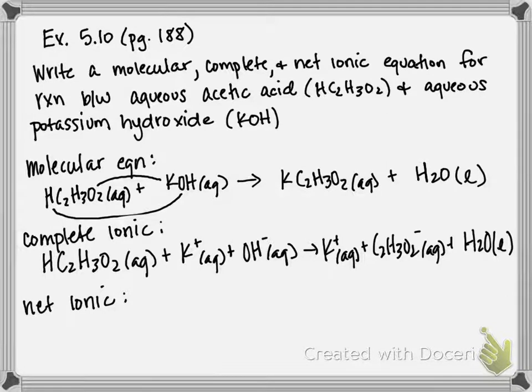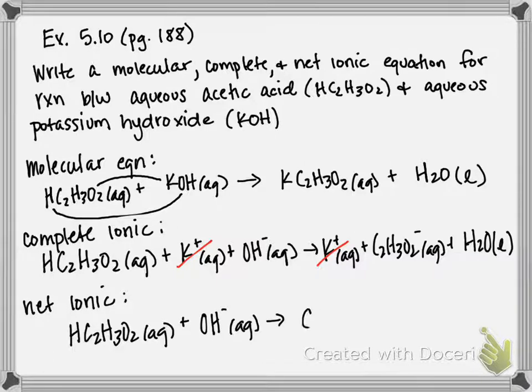Now that our complete ionic is written, we can look at what is an ion on both sides of the equation. The only thing that cancels out here is our potassium ion. It's the only spectator ion technically in this equation.